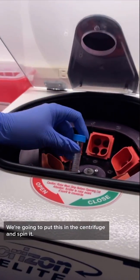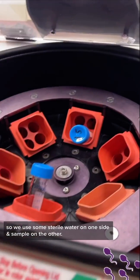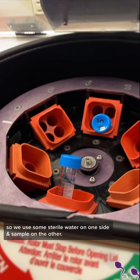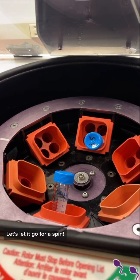We're going to put this in the centrifuge and spin it. We have to have it balanced, so we use some sterile water on one side, sample on the other. Let's let it go for a spin.